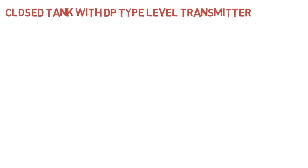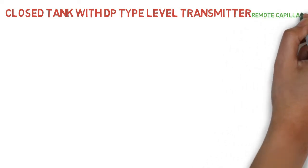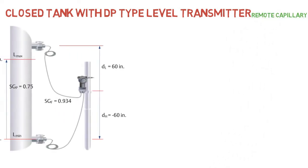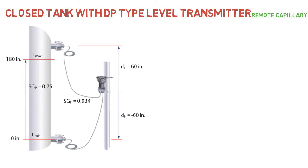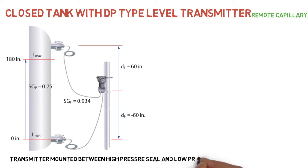Closed tank with DP type level transmitter, remote capillary. Transmitter mounted between high pressure seal and low pressure seal.